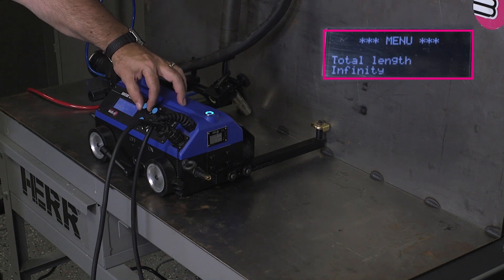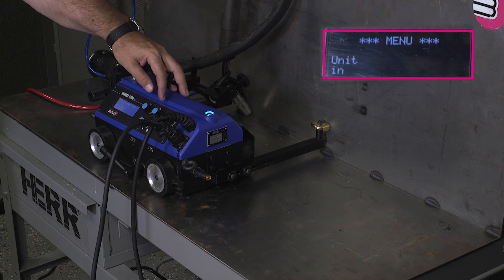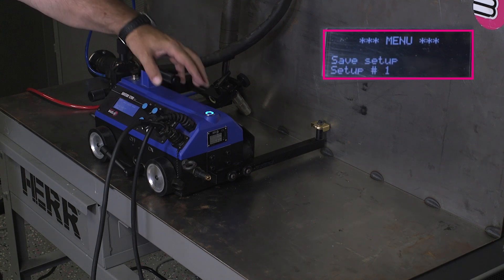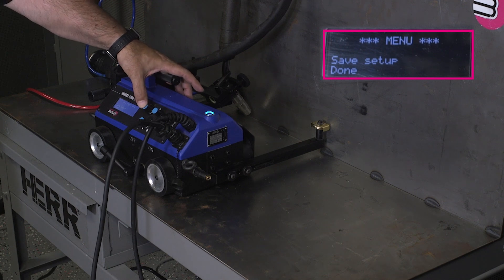Total weld length infinite. No current lowering. We want it in inches. Save setup number one. Hold down F2. Save setup done. Hold down F1. Get back to the main menu.